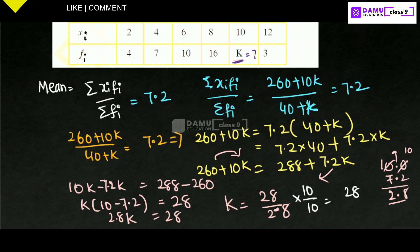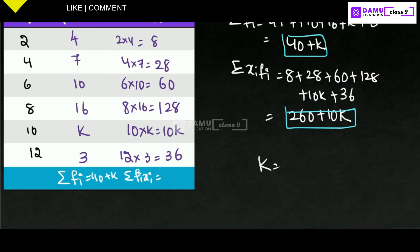What you will get 280 by 28. 28 ones are 28, 10. Then k equals 10. That is the answer. k equals 10. Then only we will get mean as 7.2. Thanks for watching. Please subscribe.